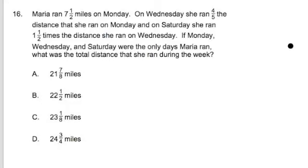Maria ran 7.5 miles on Monday. On Wednesday she ran 4 fifths the distance she ran on Monday, and on Saturday she ran 1.5 times the distance she ran on Wednesday. If Monday, Wednesday, and Saturday were the only days Maria ran, what was the total distance that she ran during the week?